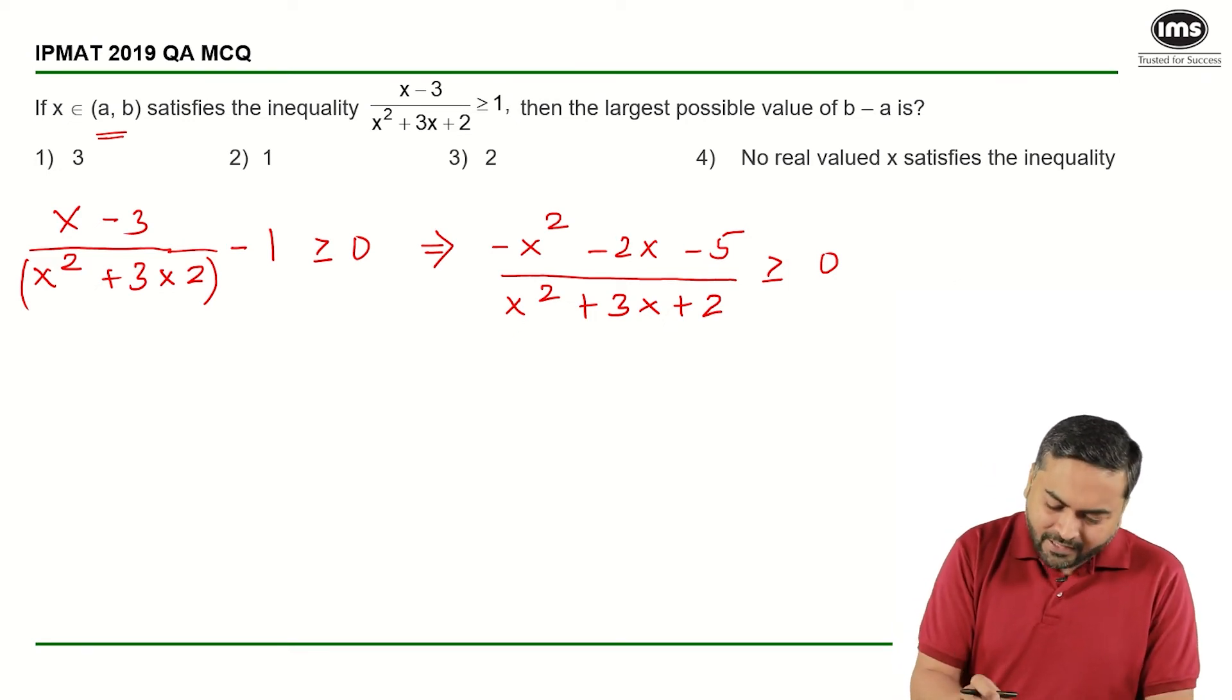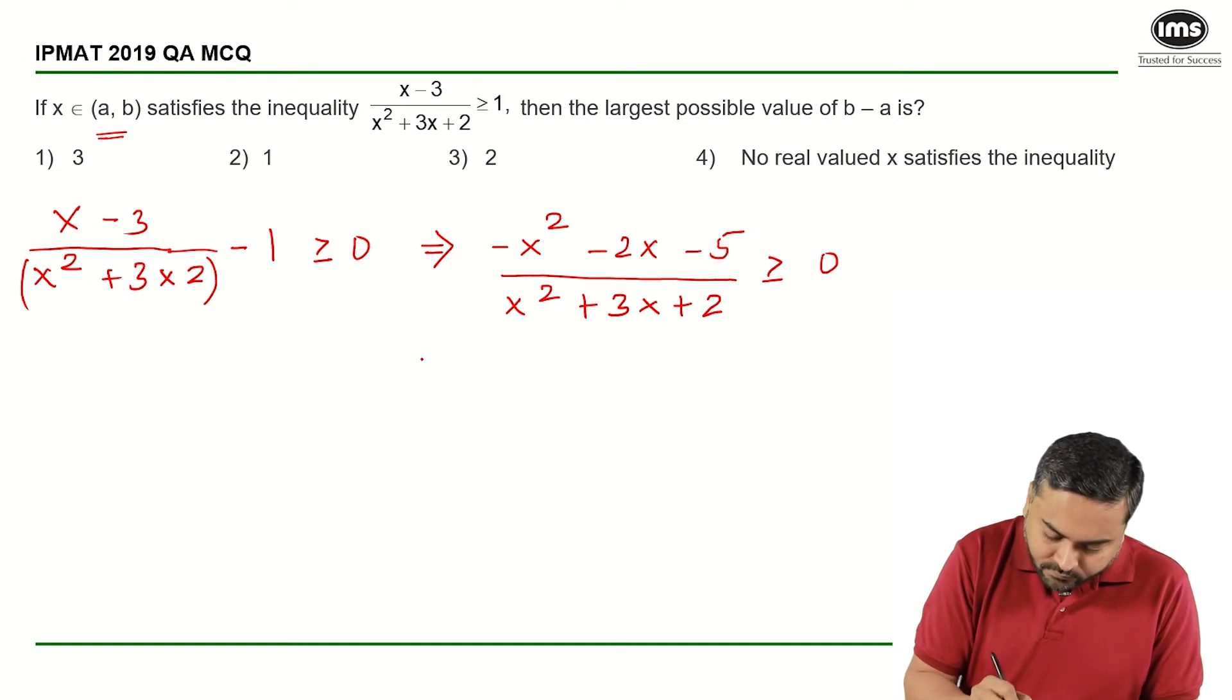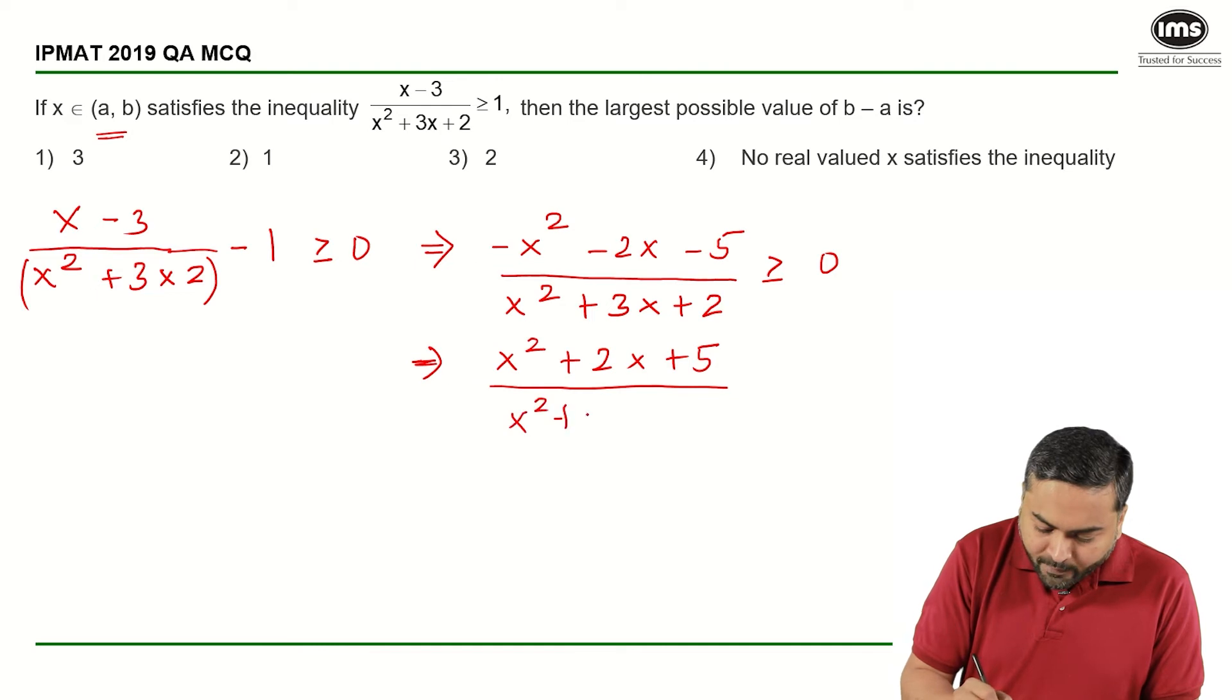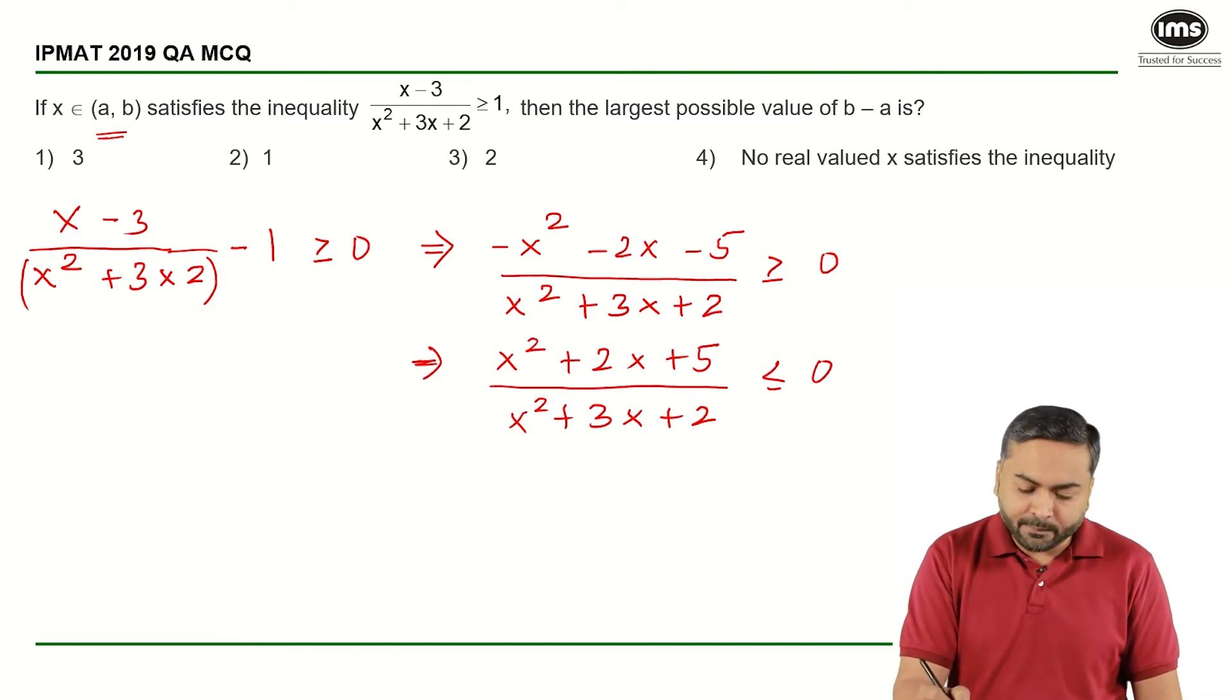Now I can take the negative sign outside in the numerator and I will be left with (x² + 2x + 5)/(x² + 3x + 2) ≤ 0, multiplying by negative sign on both sides.